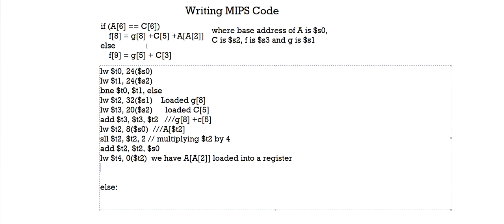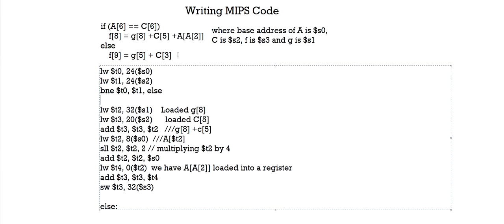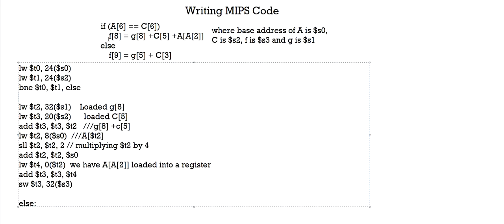Now we just add G[8] + C[5] (in T3) to A[A[2]] (in T4): add T3, T3, T4. Finally, store this entire result in F[8]: store T3 into offset 8 × 4 = 32, base register S3. This is how you write or execute the line: F[8] = G[8] + C[5] + A[A[2]] in MIPS.